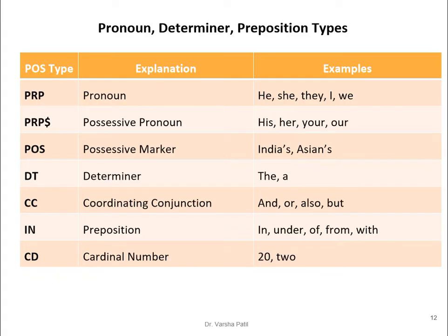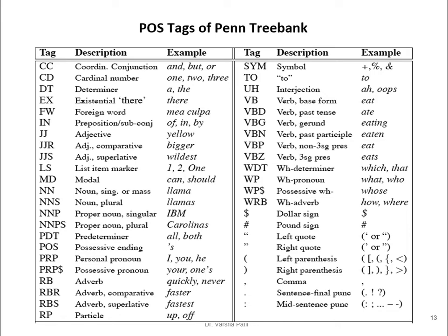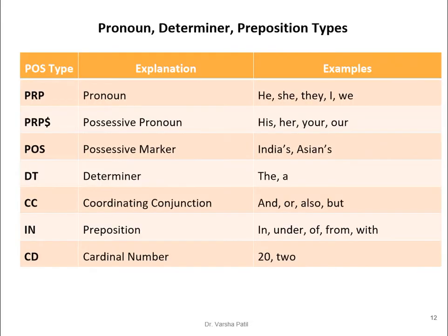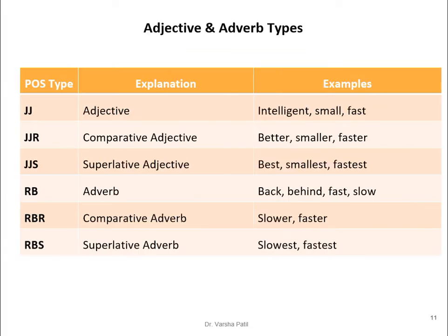PRP is personal pronoun (e.g., he, she, they, I, we). For possessive pronouns, PRP$ uses the dollar sign. POS is the possessive marker, used with proper nouns (e.g., India's). DT is determiner — 'a' and 'the' come under this category. CC is coordinating conjunction — connecting words like and, or, but. IN is preposition (e.g., in, under, of, from, with). CD is cardinal number, whether written as digits or English words (e.g., 22, twenty-two). These cover the important tags among the 45 PTB tags.